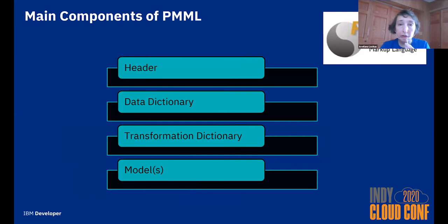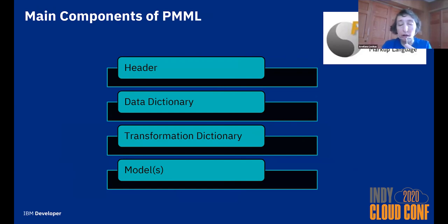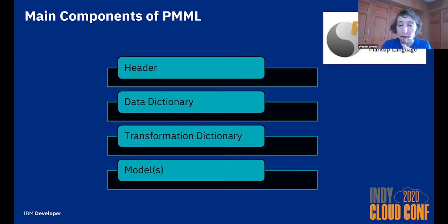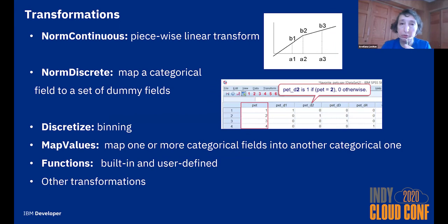PMML is an XML document that represents a machine learning or statistical model. It must contain header and data dictionary elements. The header has information about your application including timestamp and copyright. The data dictionary has a description of your data fields for regular structured data. The transformation dictionary is optional but describes any data transformations. In PMML you can have zero or more models — zero models means just data transformations, and if you have several models you need to specify which one to use.